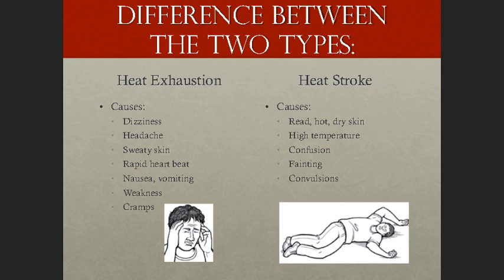Heat stroke, on the other hand, is much more serious. It causes red, hot, and dry skin, and a very high internal body temperature that rises significantly. It causes confusion and disorientation. It causes some people to faint — in medical science they call that syncope — and it also causes convulsions.